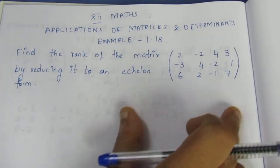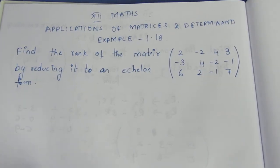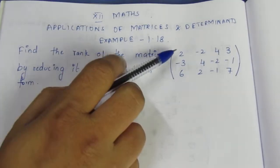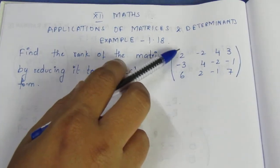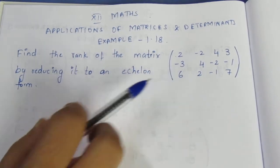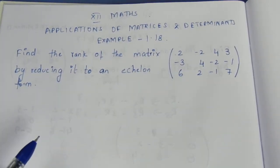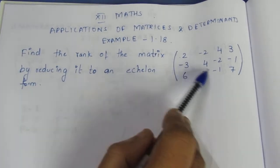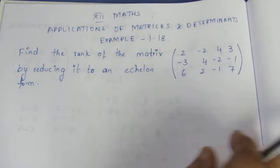So, echelon form is used for finding the rank. Echelon form is what? The first row, first column we have 0. On the diagonal we have 0.